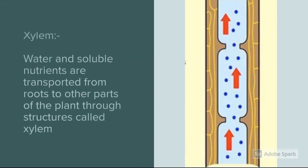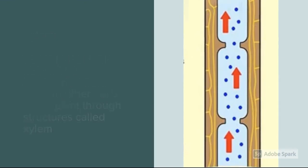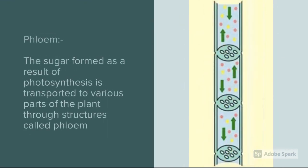Water and soluble nutrients are transported from the root to other parts of the plant through structures called xylem. The sugar formed as a result of photosynthesis is transported to various parts of the plant through structures called phloem.